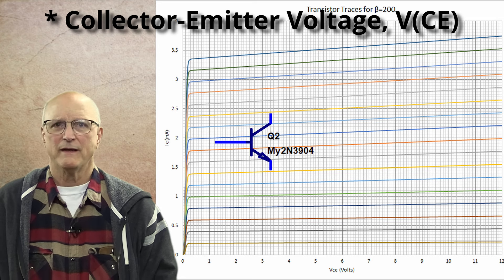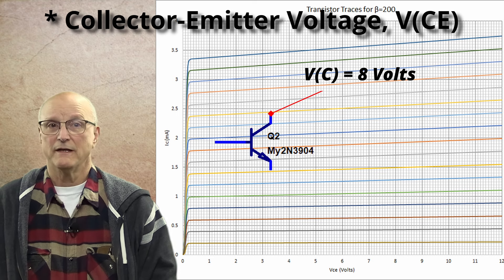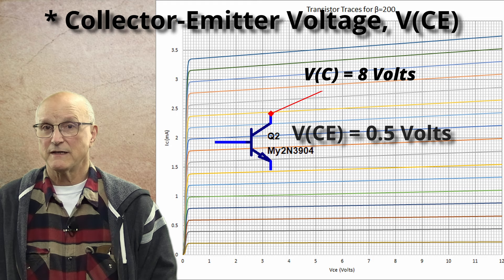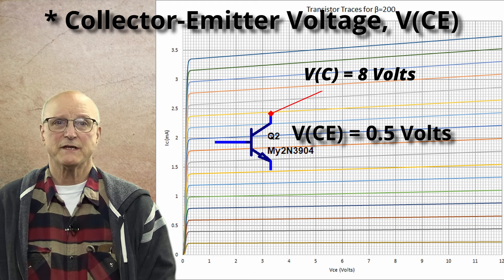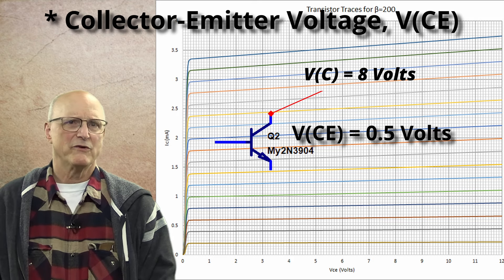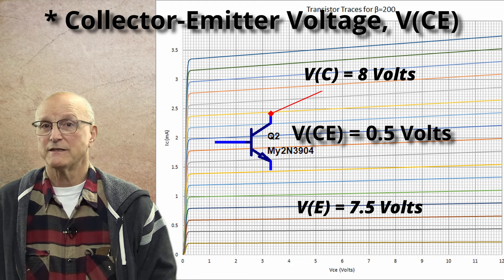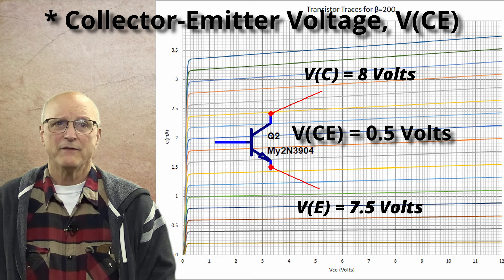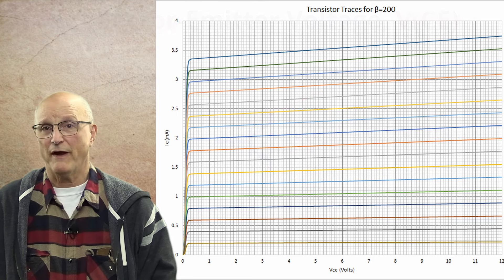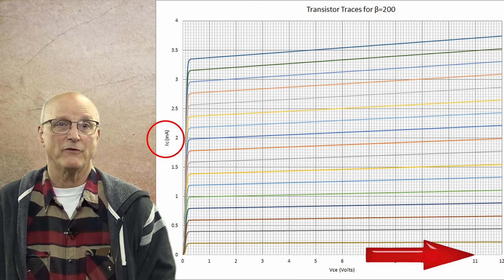It is possible for a transistor to have 8 volts on its collector and still be in saturation. This is because its collector emitter voltage is in the region commonly referred to as a saturation region. What we are not seeing when we look at only the collector voltage is the emitter voltage. This is why transistor curve tracers traditionally produce graphs of how the collector current changes with respect to the collector emitter voltage.